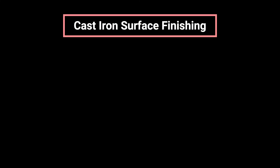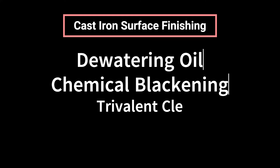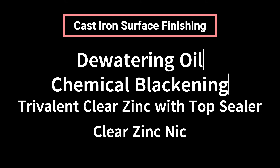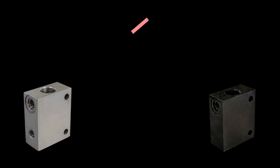When it comes to cast iron material, the most commonly applied surface finishing methods are: dewatering oil, chemical blackening, trivalent clear zinc with top sealer, and clear zinc nickel with top sealer. Dewatering oil and chemical blackening both offer limited corrosion protection during shipping and storage, with minimal protection that varies depending on the storage environment. Dewatering oil is the standard option for custom integrated packages, while chemical blackening is standard on three-letter bodies.